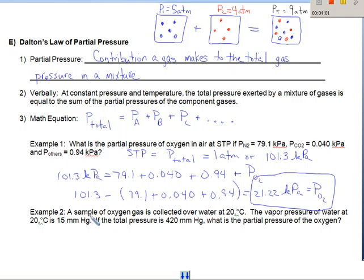Now let's come down and look at this one. We have a sample of oxygen gas is collected over water at 20 degrees Celsius. The vapor pressure of water at 20 degrees Celsius is 15 millimeters of mercury. If the total pressure is 420 millimeters of mercury, what is the partial pressure of the oxygen? Well, before we do this problem, I want to show you what collecting a gas over water looks like.